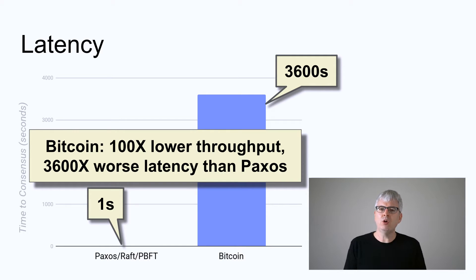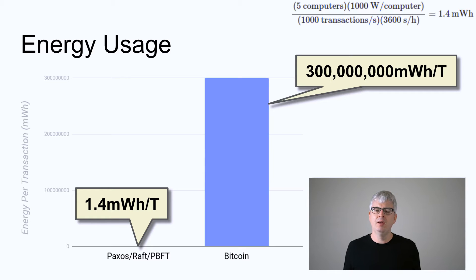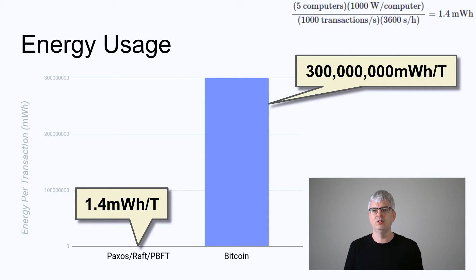If that doesn't convince you, let's talk about energy usage. It seems obvious that if Bitcoin is running on thousands of machines and Paxos is running on five machines, Bitcoin will be a thousand times worse in energy consumption. Well, actually it's much, much worse. Paxos barely takes any time to commit a transaction, using a small number of machines for a small period of time — barely consuming any electricity, on the order of milliwatts. Bitcoin, on the other hand, has thousands of computers all competing with each other to be more wasteful of energy than their peers. Whoever's the most wasteful has the highest chance of mining a block and getting the reward.